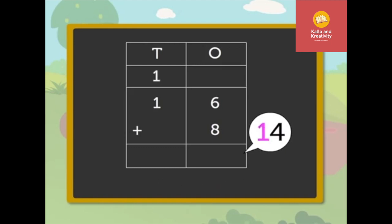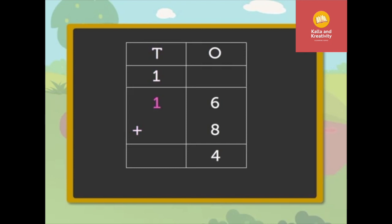Carry one-ten to the tens column and write four in the ones column. Now, add the tens, that is, one plus one is equal to two. Thus, sixteen plus eight is equal to twenty-four.